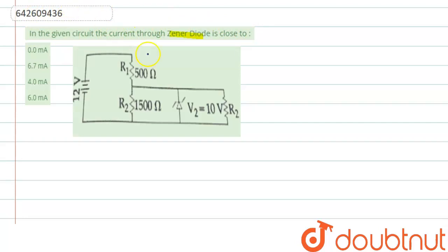So we have to find out the current through Zener diode. To calculate that, we first know that Zener diode is on or off. We must know.